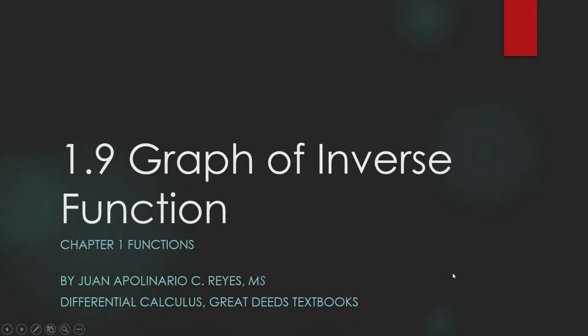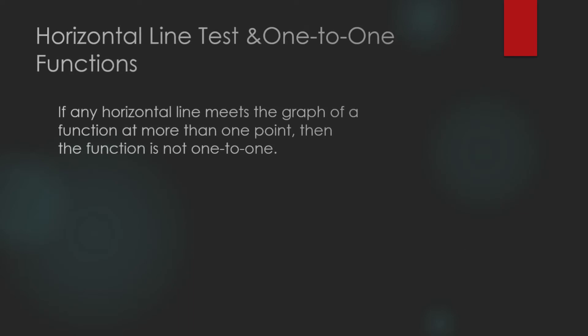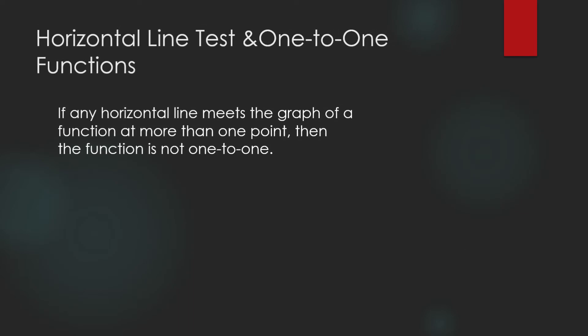Lesson 1.9: Graph of Inverse Functions. In this lesson, we shall go back to one-to-one functions and how to tell if functions are one-to-one. We are concerned with one-to-one functions because it is only one-to-one functions that are sure to have an inverse function. We shall also show how to obtain the inverse function and how the graph of a function and its inverse appear on the same xy plane.